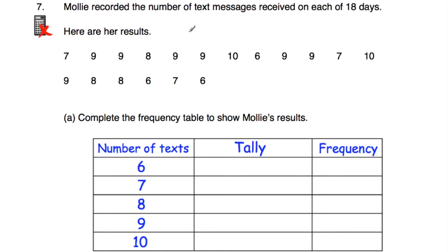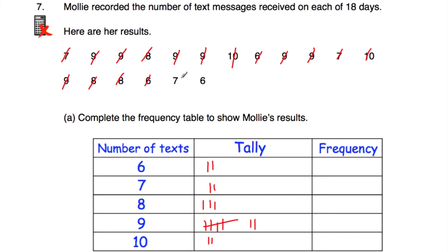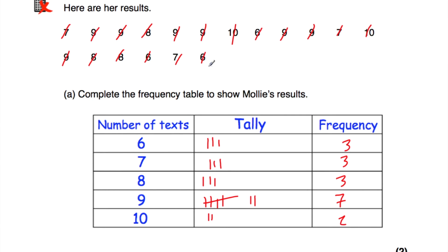Question number seven. Molly records the number of text messages she receives on each of 18 days. She gets 7 on day 1, 9 on day 2, and so on. Completing the tally chart and frequencies: on three days she received six messages, on three days she received seven, on three days she received eight, on seven days she received nine, and on two days she received ten. Part B: write down the mode. The mode is the most common value — nine occurs seven times, the highest frequency, so nine is the mode.